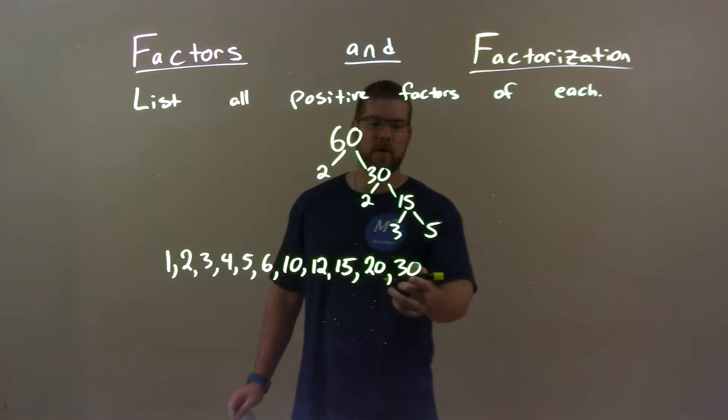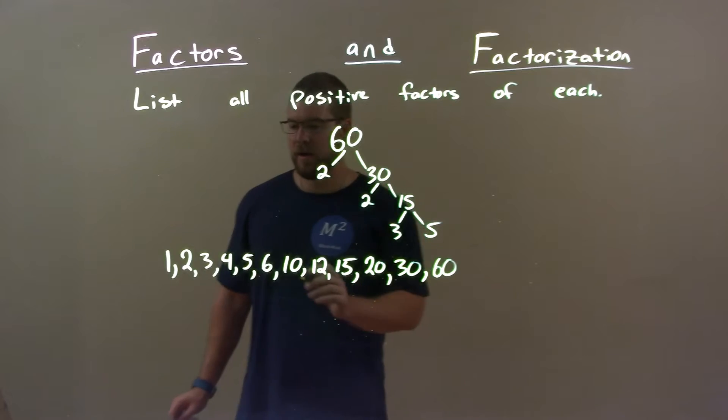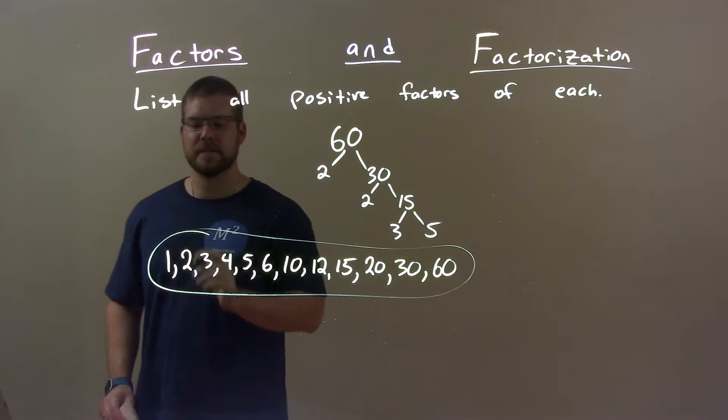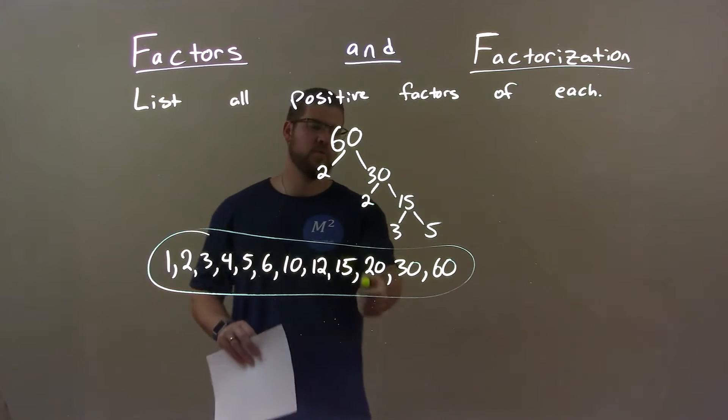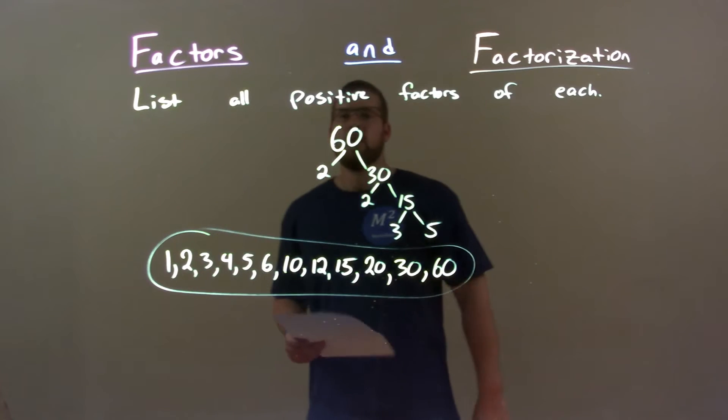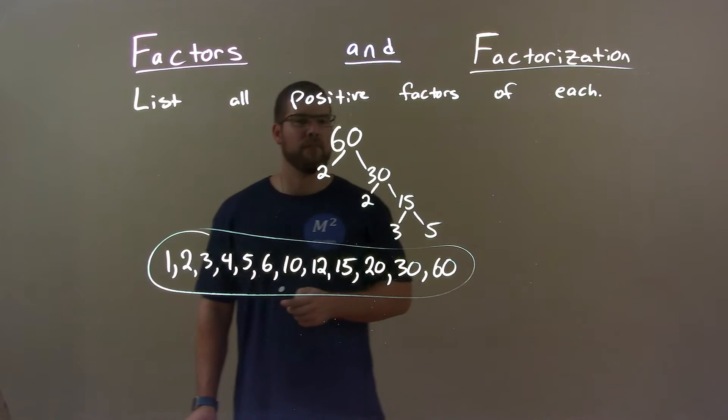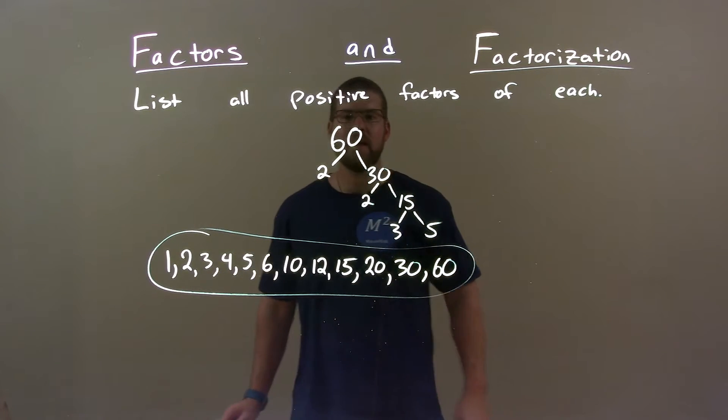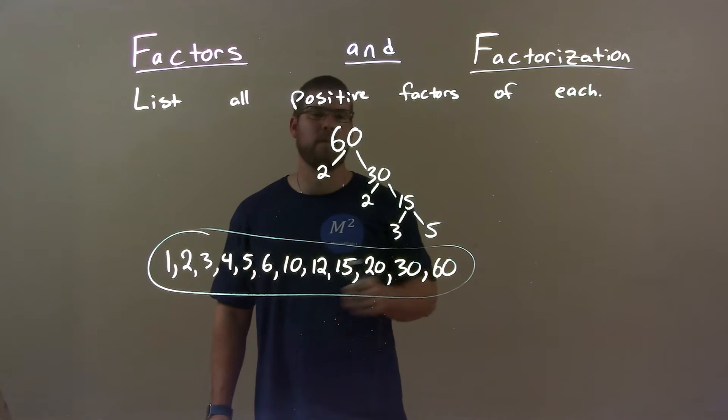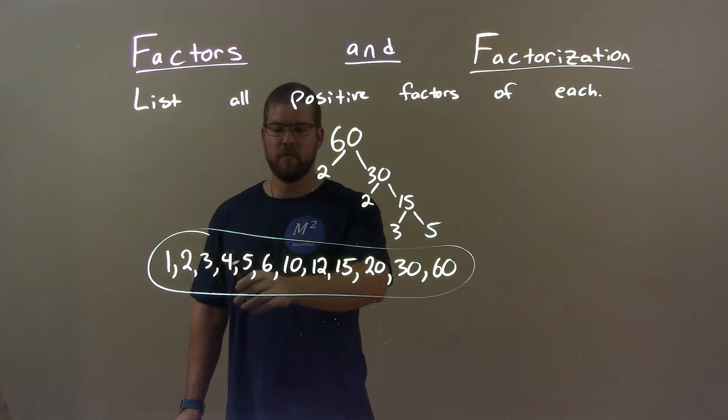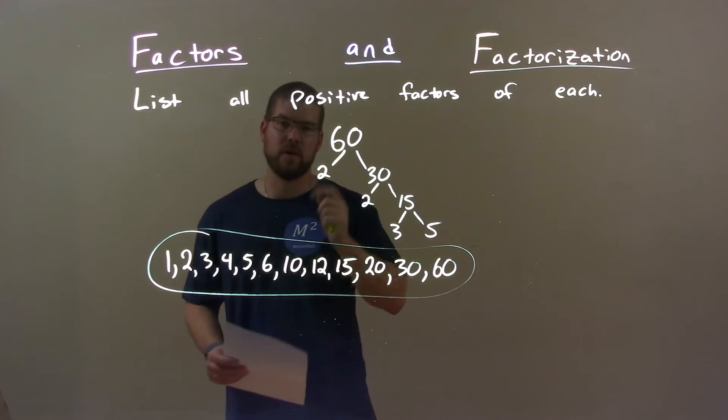Our final, we just add a 60, okay? And now we have all the positive factors of 60. They are 1, 2, 3, 4, 5, 6, 10, 12, 15, 20, 30, and 60. And so there is our final answer.